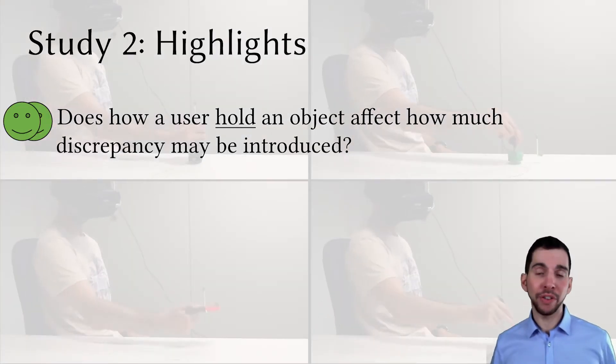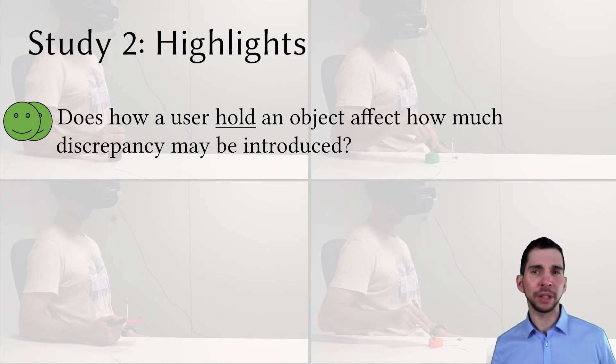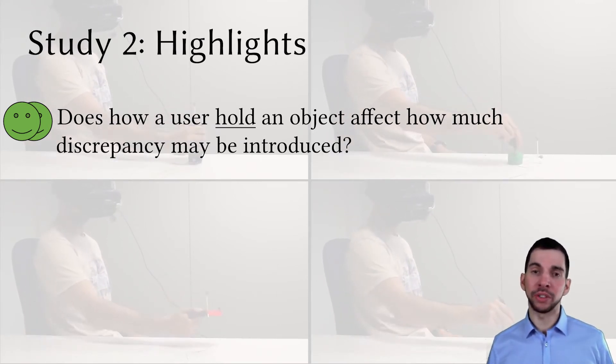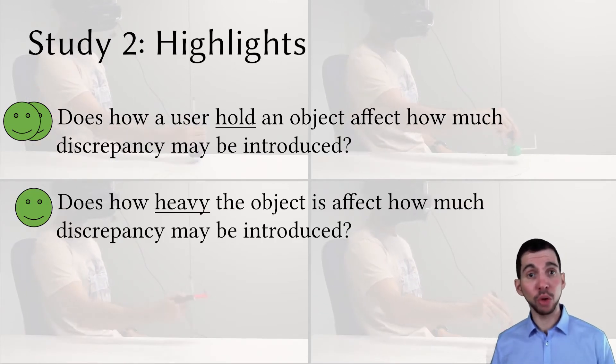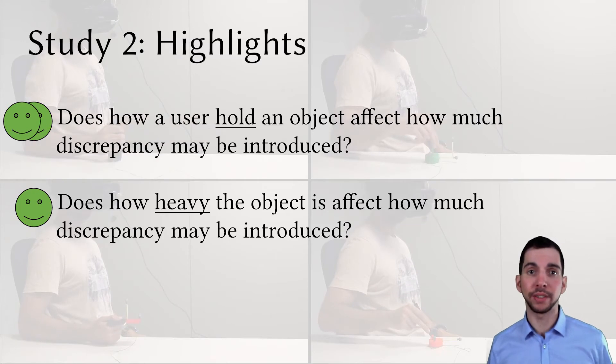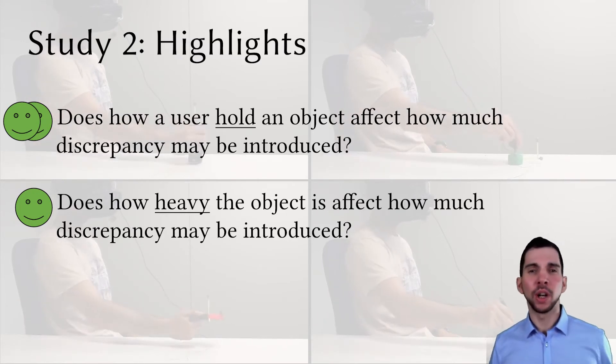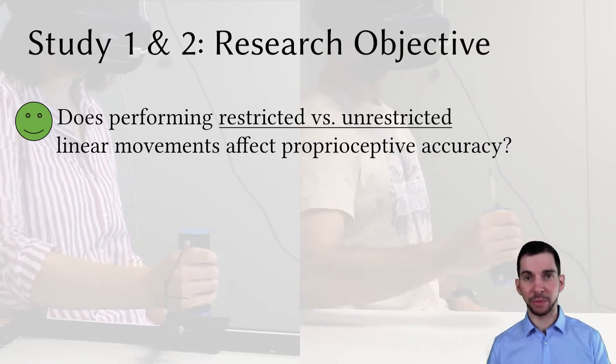Our results support the findings from study 1. Different grasping types do not seem to impact the detection thresholds. Additionally, our results suggest that object masses below 500 grams play an insignificant role when designing visuo-haptic illusions. And at this point, we were interested in whether there exists any differences between restricted and unrestricted movement.